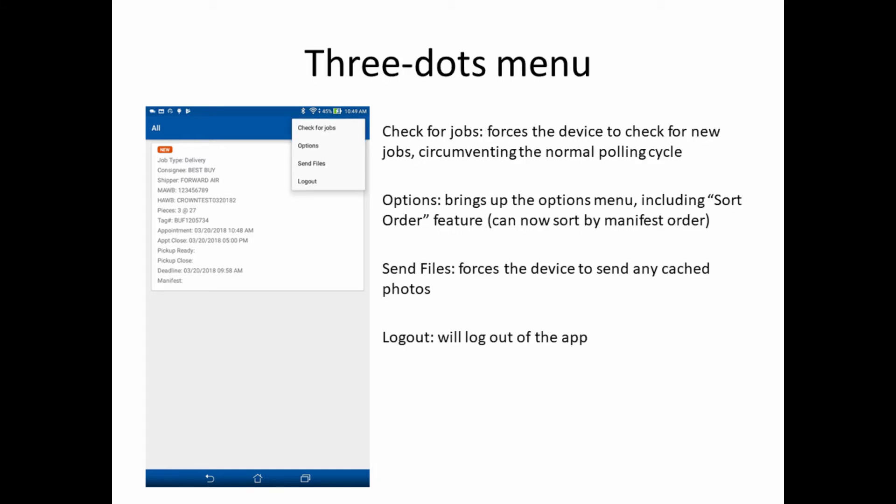Also on this landing screen, you'll notice three dots in the upper right corner, and tapping on those three dots brings up the following options. Check for Jobs forces the device to check for new jobs, circumventing the normal polling process that takes place.